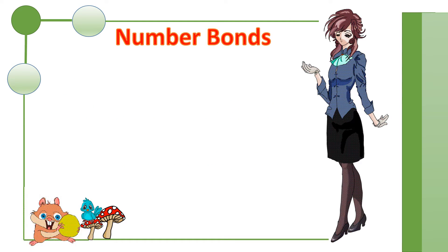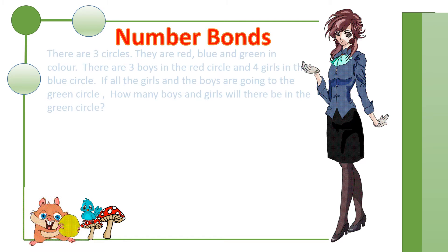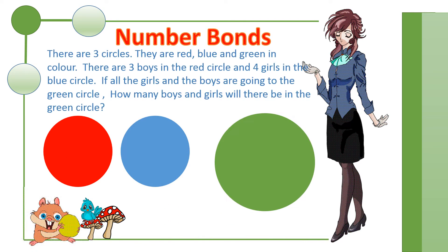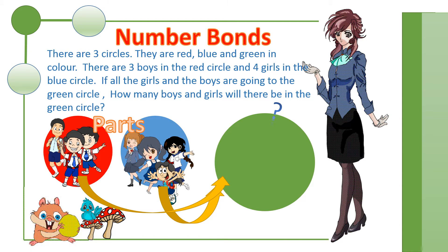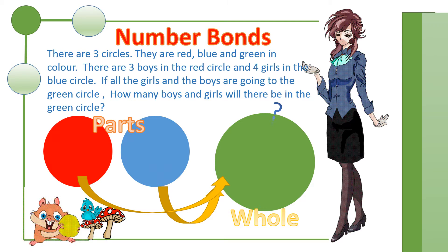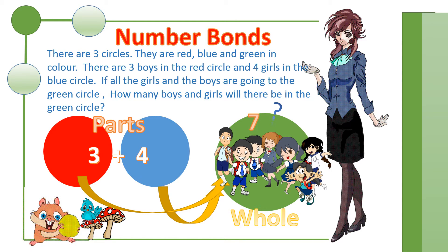Let me show you an example. There are three circles. They are red, blue, and green in color. There are three boys in the red circle and four girls in the blue circle. If all the girls and the boys are going to the green circle, how many boys and girls will there be in the green circle? The red and blue circles are referred to as parts. The green circle is referred to as the whole. Three plus four equals seven. In the green circle, we should have seven boys and girls.